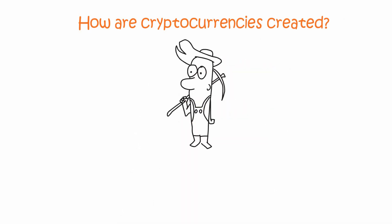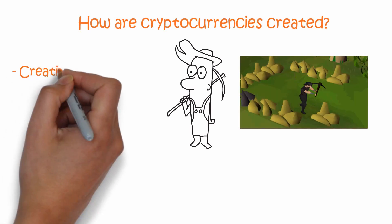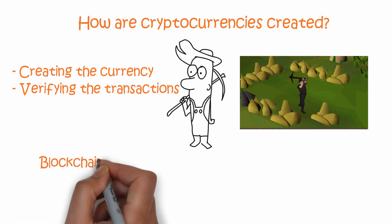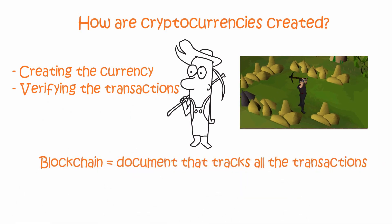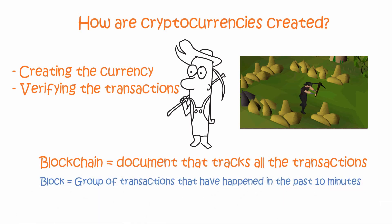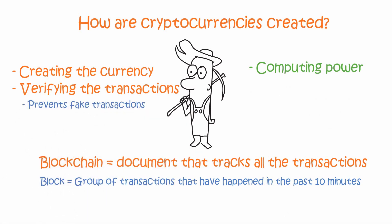Cryptocurrencies are created with mining — not mining gold with big axes, but the system that processes creating the currency and verifying the transactions. To put it short, blockchain is a document that tracks all the transactions ever in the history of the cryptocurrency. Groups of transactions that have happened in the past 10 minutes are called a block that the bitcoin miners mine, not with big axes but with their computing power. The mining verifies the block, which prevents fake transactions.